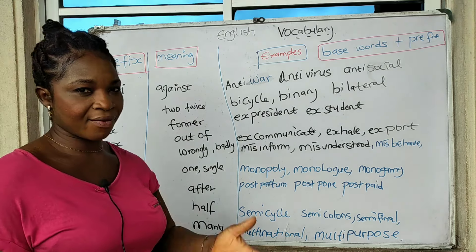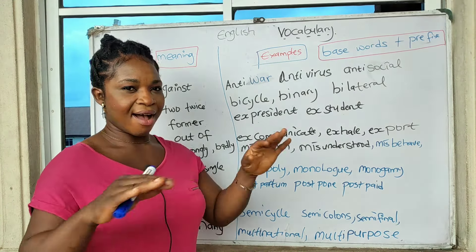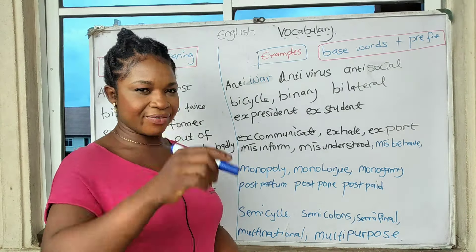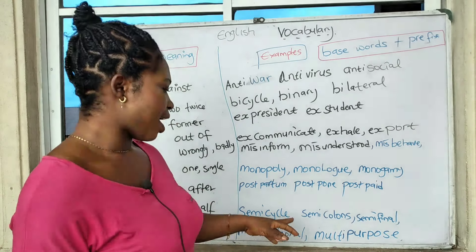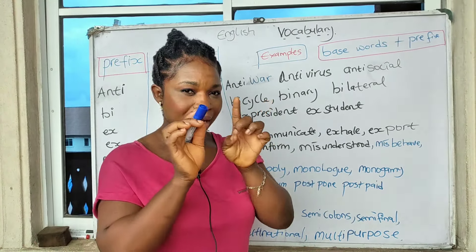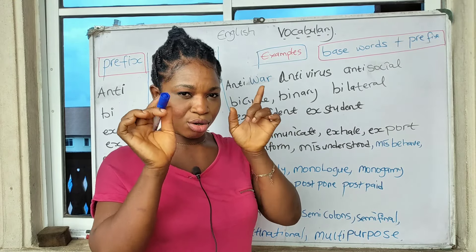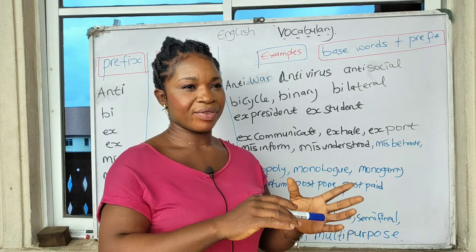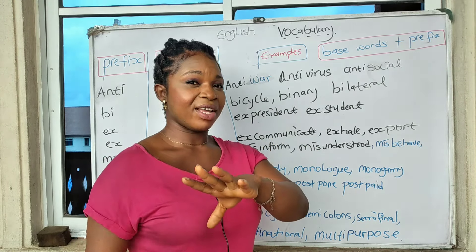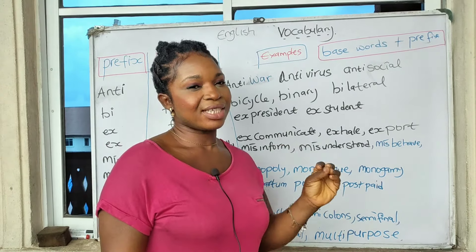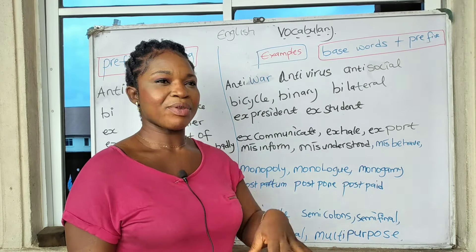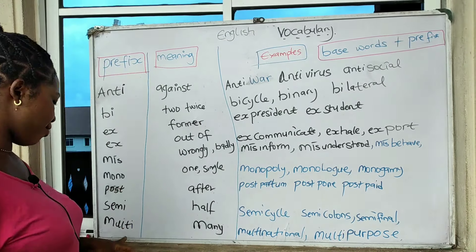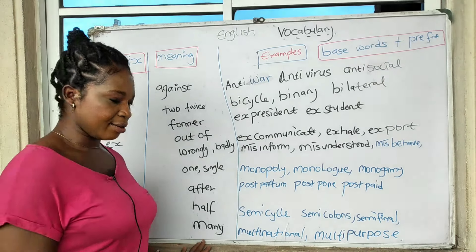'Semi' means half of something. We have 'semicircle' — a full circle divided gives you a semicircle. We have 'semi-columns' — not full columns but half, shorter columns. We have 'semi-finals' — it is not the final yet, but it is about to be; after the semi-final comes the final.